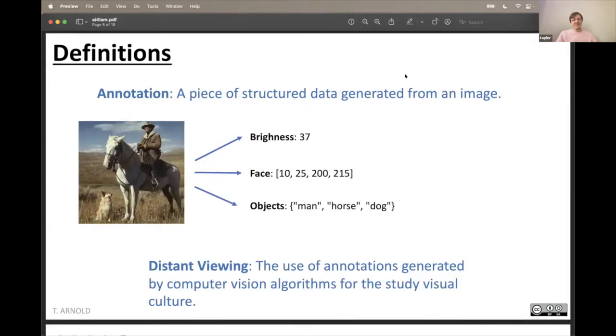I always like to start off with definitions. What I call an annotation, which is central to this work, is just a small piece of structured data that's generated from an image. So the image on the left, three different kinds of annotations. We might have a simple number like how bright is the image. We might have the bounding box for a face, or we might have a list of all the objects in the image. They can be manually generated, but the ones we're working with are generated through computer vision algorithms.